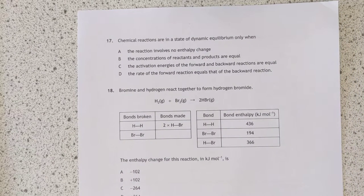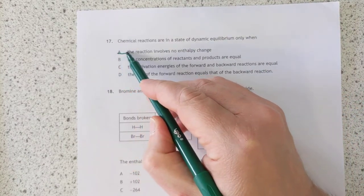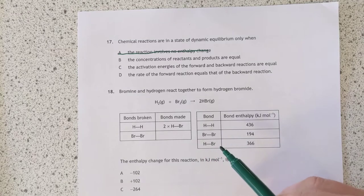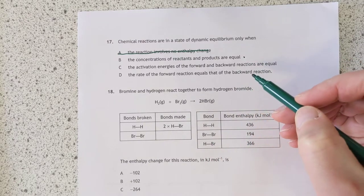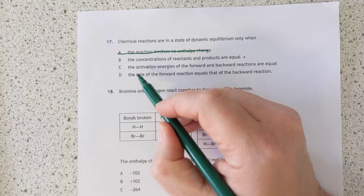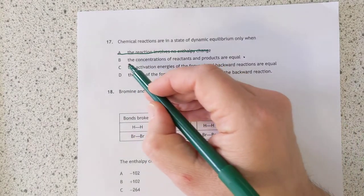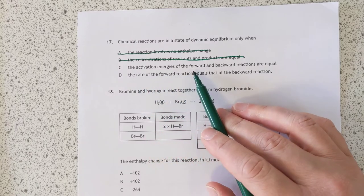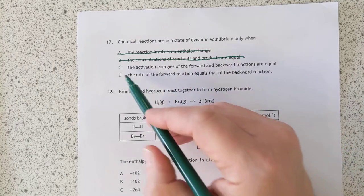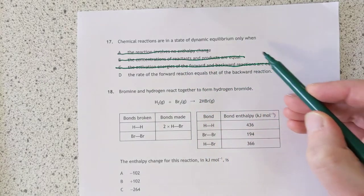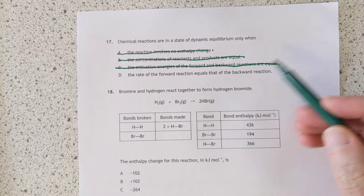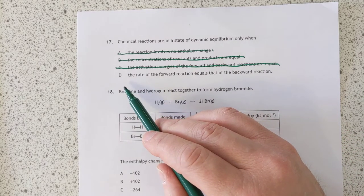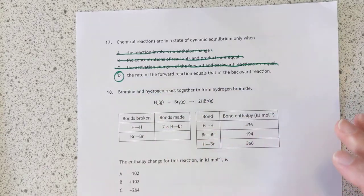17. Chemical reactions are in a state of dynamic equilibrium. Definition of equilibrium. The reaction involves no enthalpy change. Every reaction's got an enthalpy change. That's rubbish. Concentrations of reactants and products are equal. That is a trap answer. It's not the concentrations that have to be equal. It's the rate of the forward and the backward reaction that has to be equal. Concentrations can be any ratio you like at equilibrium. The activation energies of the forward and backward reactions are equal. Nope. Activation energies will always be different because the enthalpy change is always different. Go and watch the video if you're not sure on that one. And the rate of the forward reaction equals the... Yeah, there we go. It's the rates that are equal.